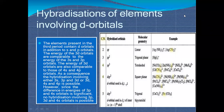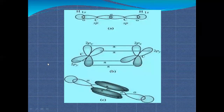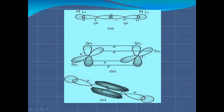In our previous class we studied about how s orbital and p orbital overlap with each other, how new hybrid orbitals form, how pi bonding forms, and how sigma bonding forms. When head-to-head overlapping occurs, a sigma bond forms; when sideways overlapping occurs, a pi bond forms.